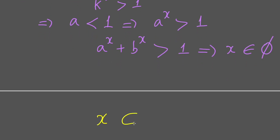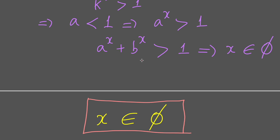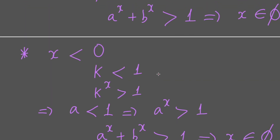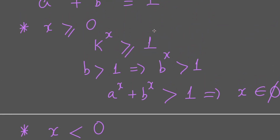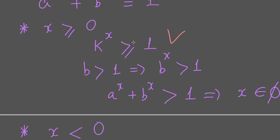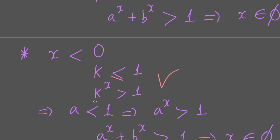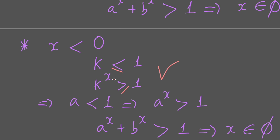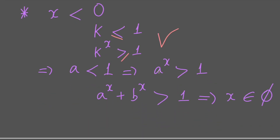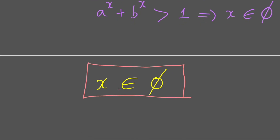x belongs to the empty set — this equation has no solution, no root. The main lesson of this equation is about the properties of exponential functions: if x > 0 and k ≥ 1, then k^x ≥ 1; if k ≤ 1 and x < 0, then k^x ≥ 1. Applying this for a and b gives us the result. Finally, x is the empty set. That's all — thanks for watching, see you later, bye!